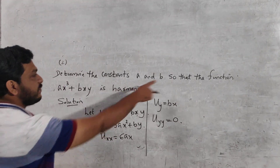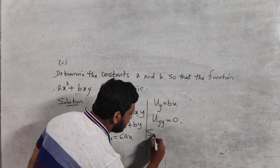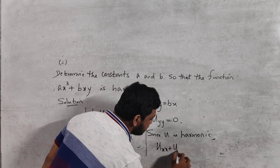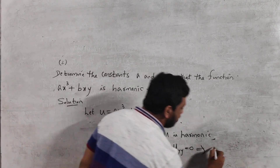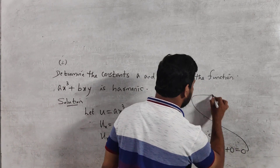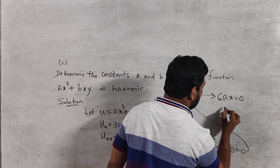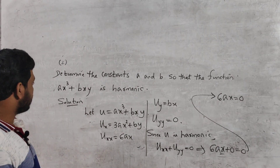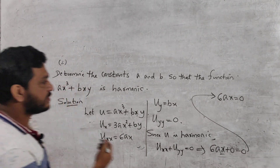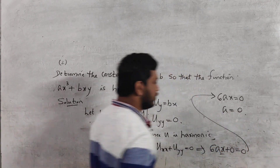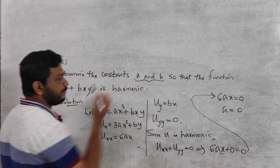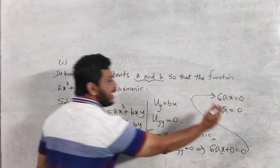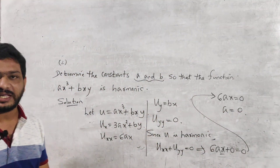Since u is harmonic, we know uxx + uyy = 0, so 6ax + 0 = 0, which implies 6ax = 0. The only possibility is a = 0, since x is a variable and cannot be treated as constant. Therefore the function is harmonic only when a = 0, and b can be any real number.